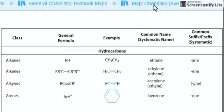The basic grouping is your hydrocarbons. Hydrocarbons contain just carbon and hydrogen in your structure, and there are four that you need to remember under the hydrocarbons category: alkanes, alkenes, alkynes, and arenes.